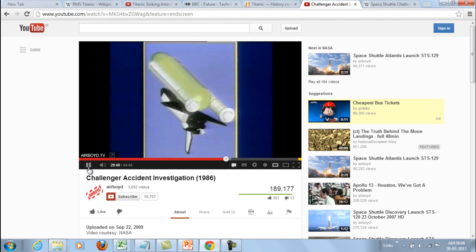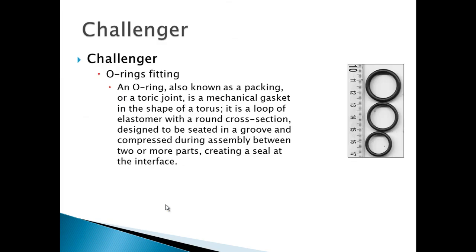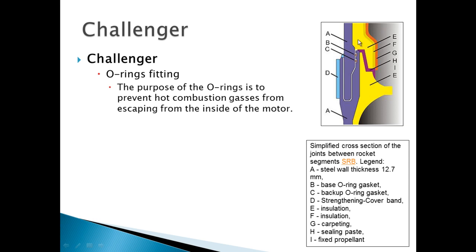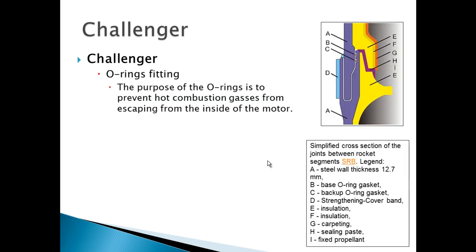During this time frame, exaggerated steering commands and control system responses were registered in telemetry data. There is quite a detailed report on how this happened. As I was sharing, the attachment was like this — the outer side here, the propellant inside, and at the joint there were these O-rings. An O-ring, also known as a packing or toric joint, is a mechanical gasket in the shape of a torus — a loop of elastomer with a round cross-section, designed to be seated in a groove and compressed during assembly between two or more parts, creating a seal at the interface.